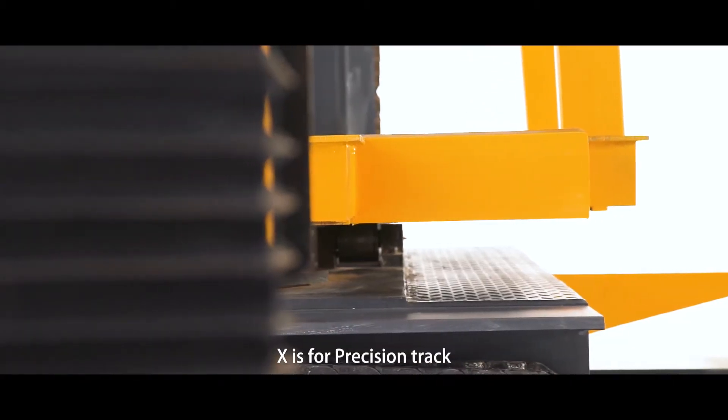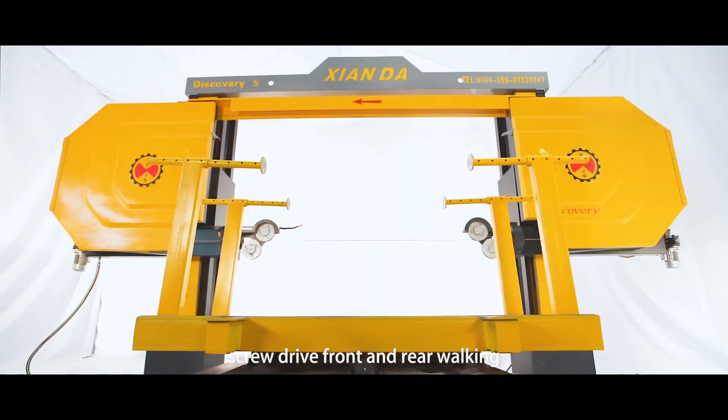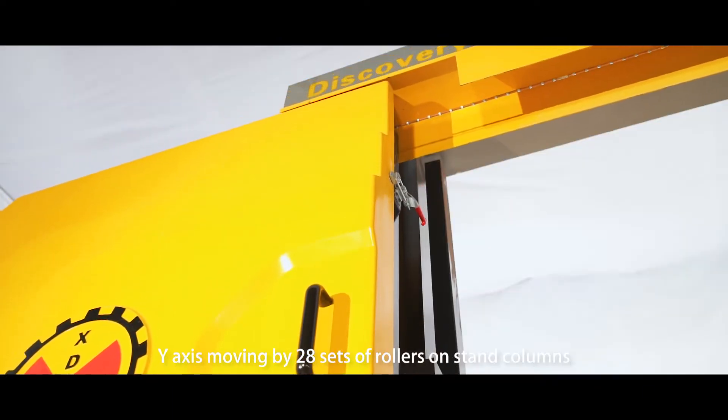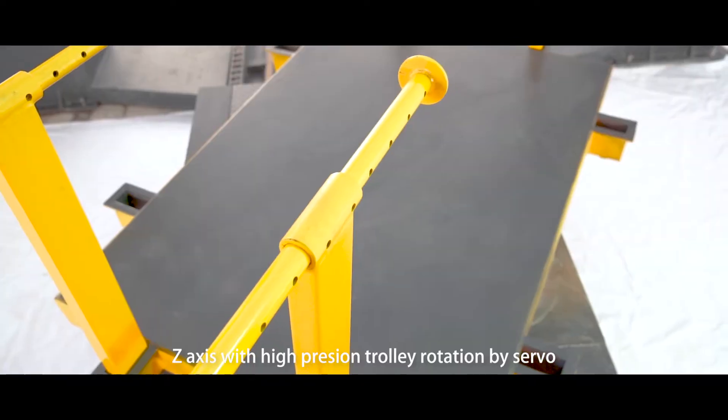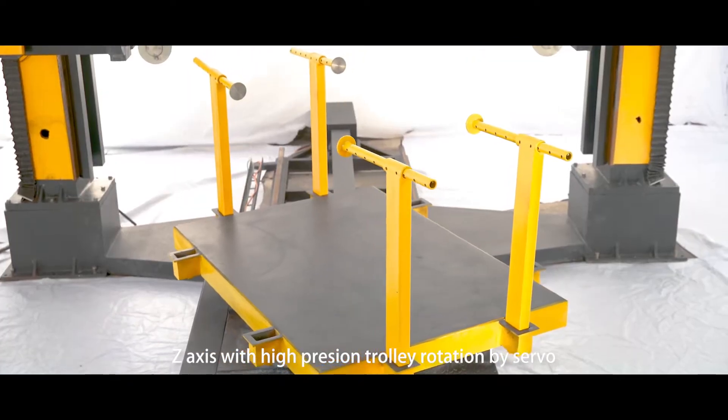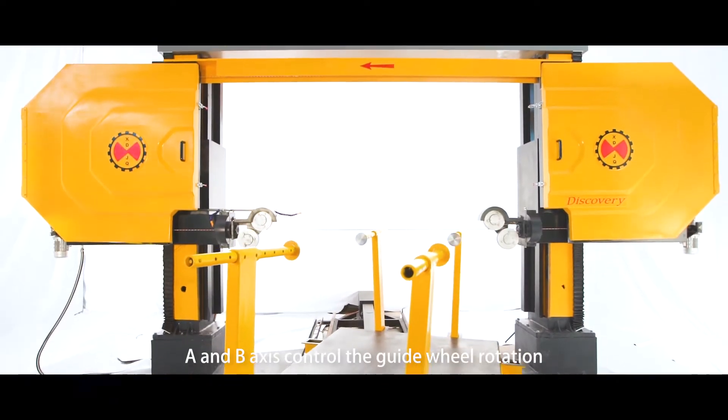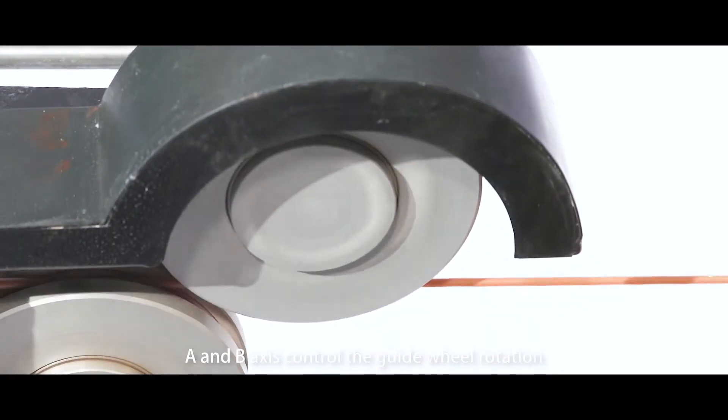X-axis for precision track, screwdriver front and rear walking. Y-axis moving by 28 sets of rollers on stand columns. Z-axis with high precision trolley rotation by servo. A and B-axis control the guide wheel rotation.